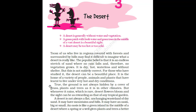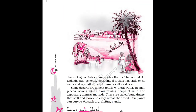Reading the last paragraph of this page: a desert is not always a flat, unchanging wasteland of dry sand. It may have mountains and hills. It may have an oasis — that means a place in the desert where there is water and plants also grow. An oasis is like a green island, a piece of land in the middle of a desert where a spring or a well gives plants and trees a better chance to grow. A desert may be hot like the Thar or cold like Ladakh. But generally speaking, if a place has little or no water and vegetation, people usually call it a desert.